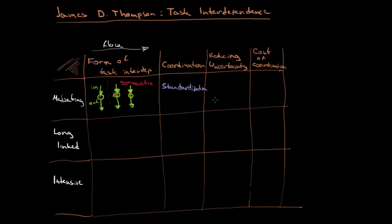Moving to the strategy for reducing costs: to make more profit, the approach is to increase the number of customers. And finally, the cost of coordination here is very low — we simply create some standards and integrate them into the company, so the coordination cost is very low.